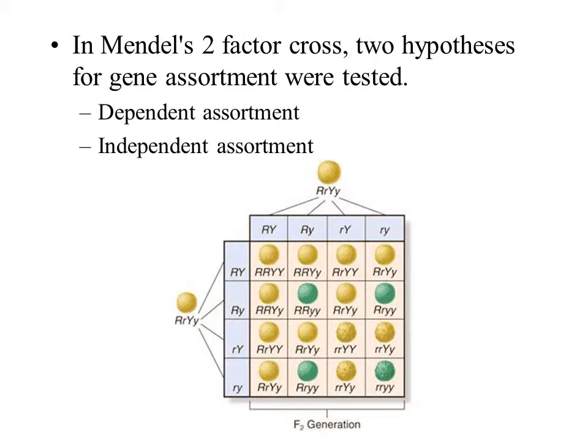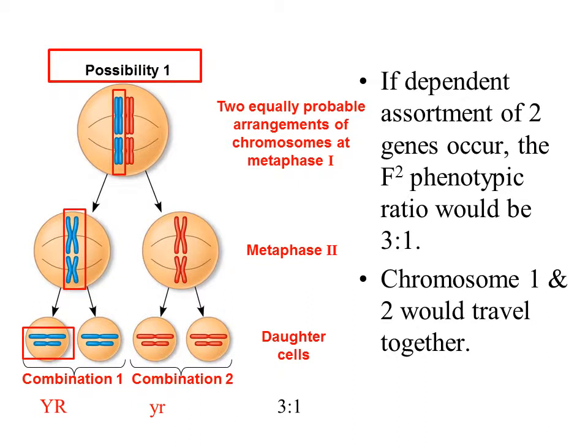Mendel was looking at two genes, one on one chromosome pair and the other on another chromosome pair. If dependent assortment of two genes occurs, the F2 phenotypic ratio would be 3 to 1. In that case, chromosome 1 and chromosome 2 would travel together. In this slide, one chromosome is on the long blue and long red chromosome, and the other chromosome has gene 2 and is the shorter of the two. Notice how with this possibility, all of the blue stay on one side and all of the red stay on one side. In this case, even though it's two genes, you will have a 3 to 1 ratio.